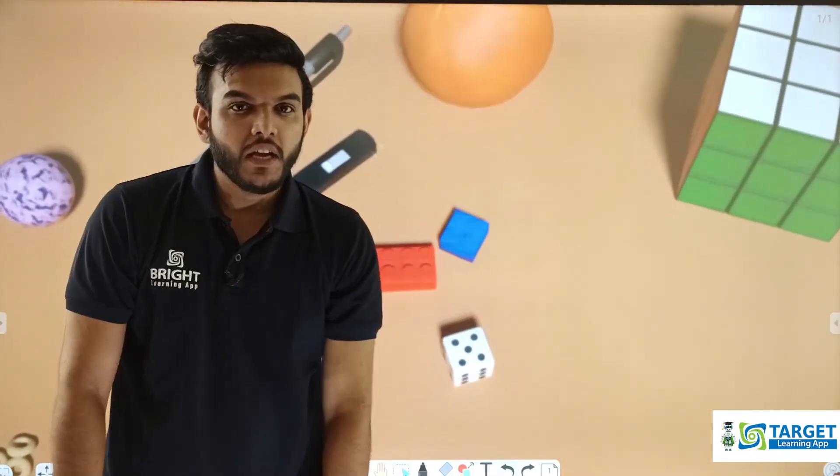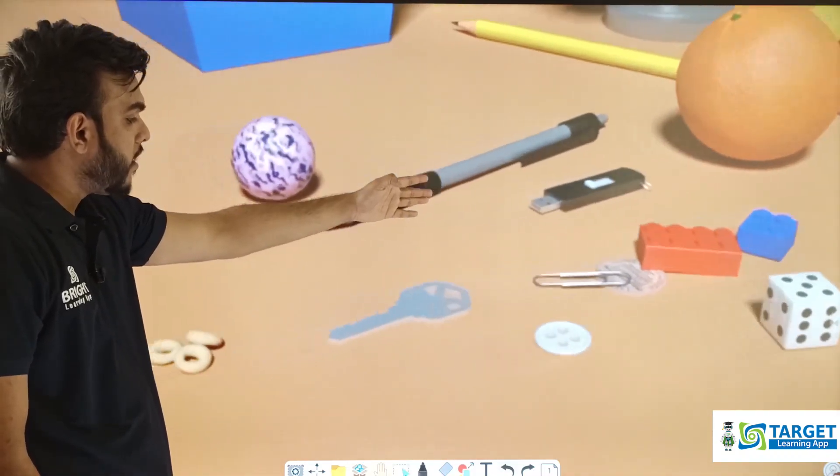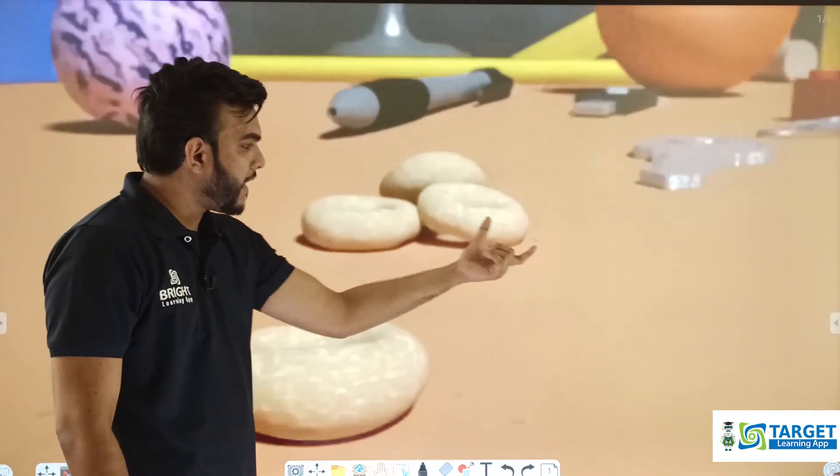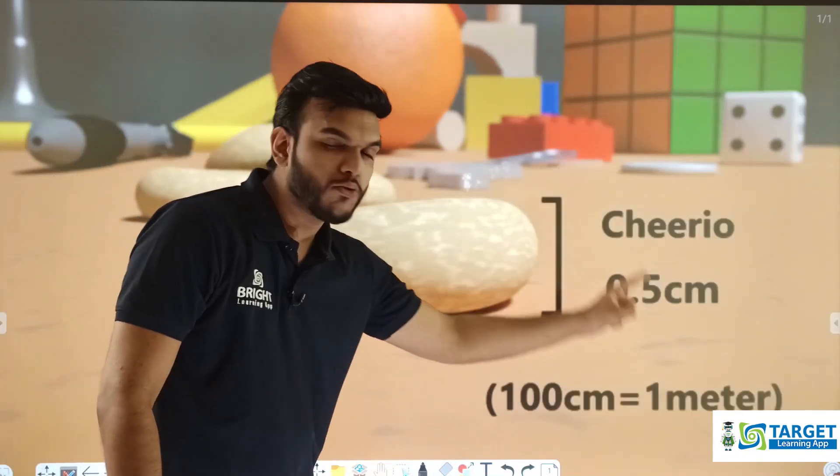What is the smallest substance in the world? It is an atom. This is not a penny, but a smaller substance - not this USB. For example, if I consider this Cheerio having a size of 0.5 centimeters, where 100 centimeters equals one meter.